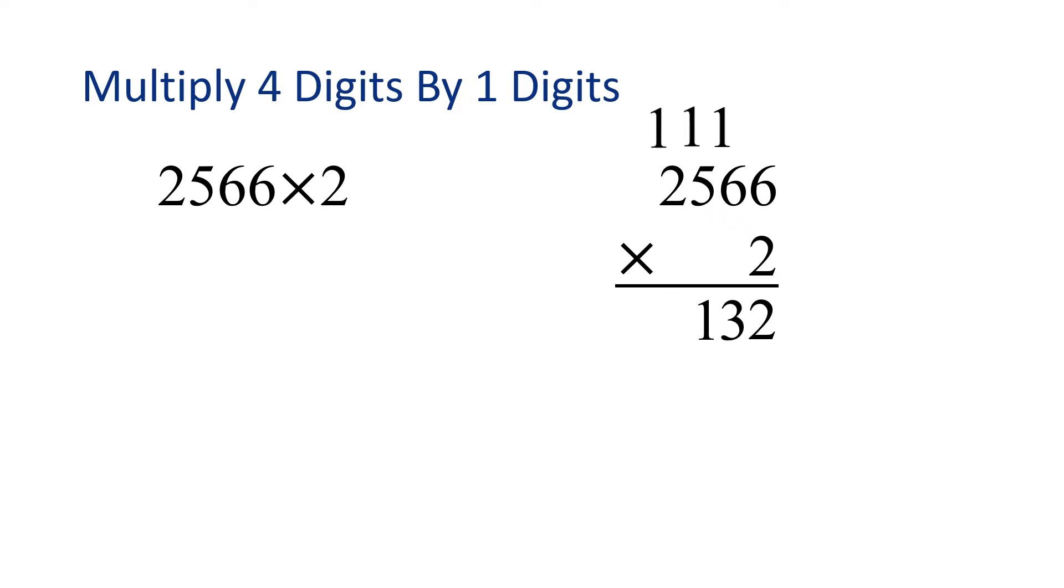Carry the 1. Now multiply 2 times 2 and then add 1. 2 times 2 is 4 plus 1 gives us 5. So we found the product of 2566 and 2 is 5132.